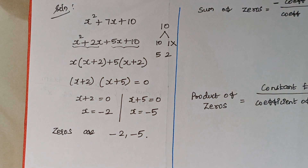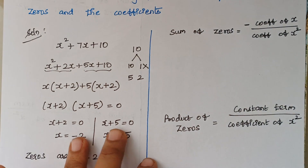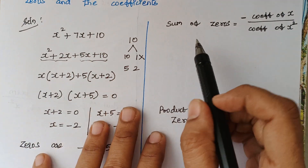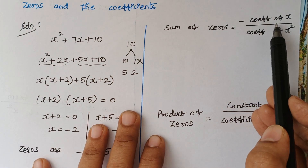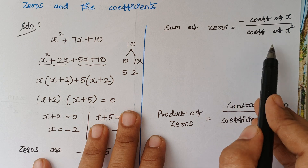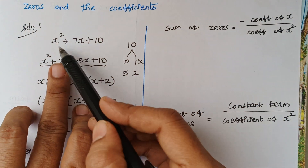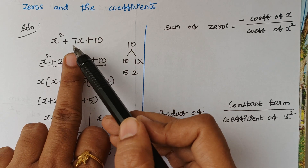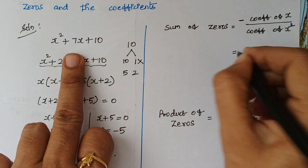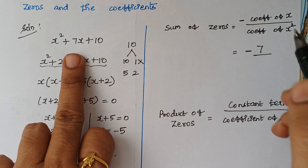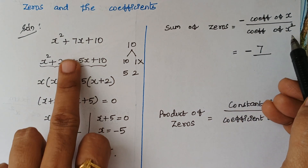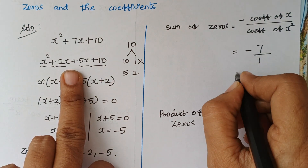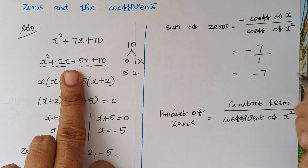The next thing is we have to verify the relationship between zeros and coefficients. The relationship is: sum of zeros = −(coefficient of x) ÷ (coefficient of x²). Looking at the polynomial, the coefficient of x is 7, so this equals −7 divided by the coefficient of x², which is 1. So the formula gives −7 ÷ 1 = −7.